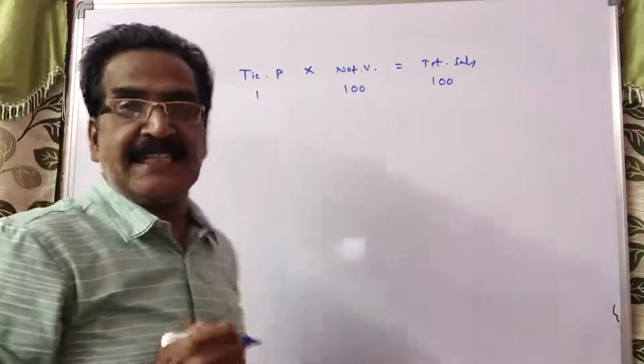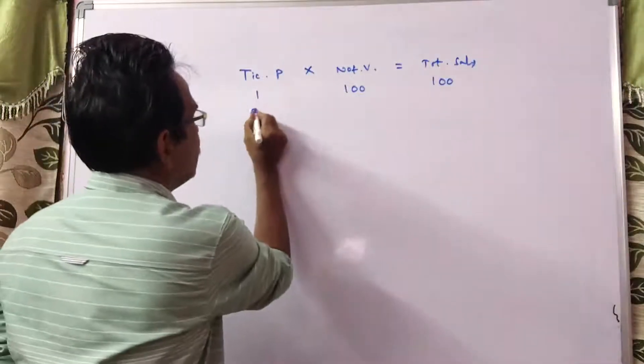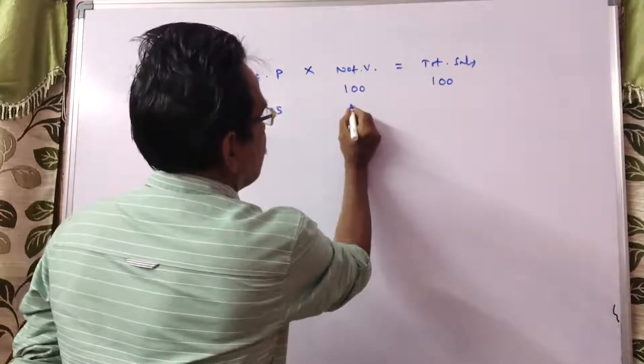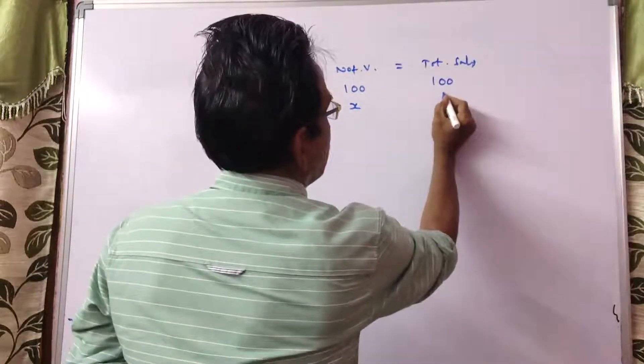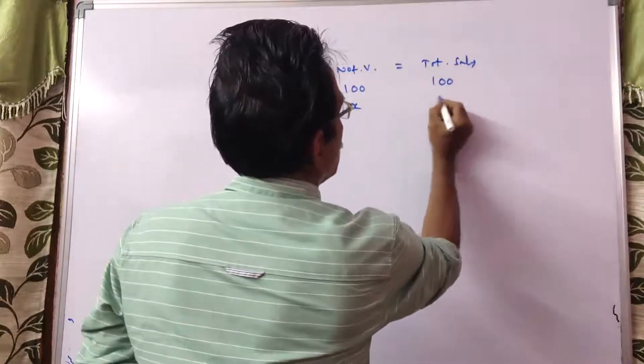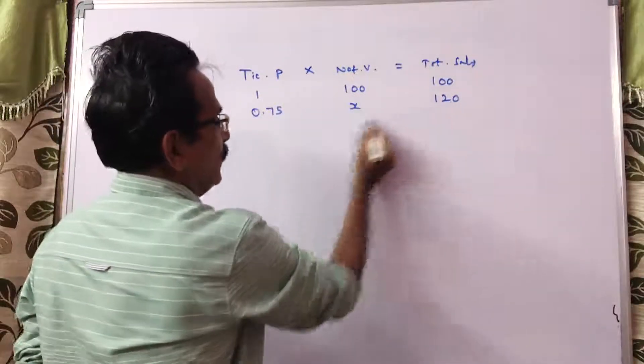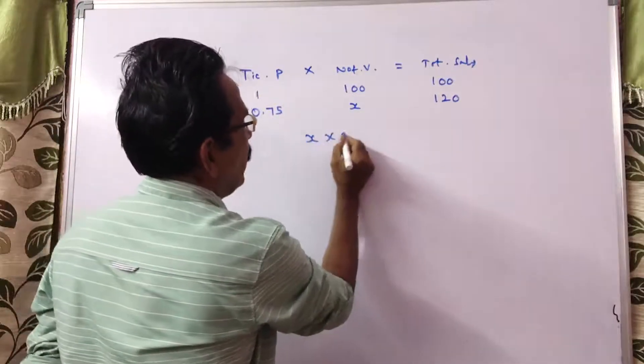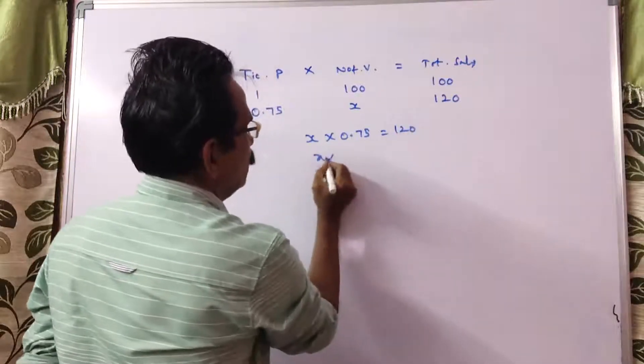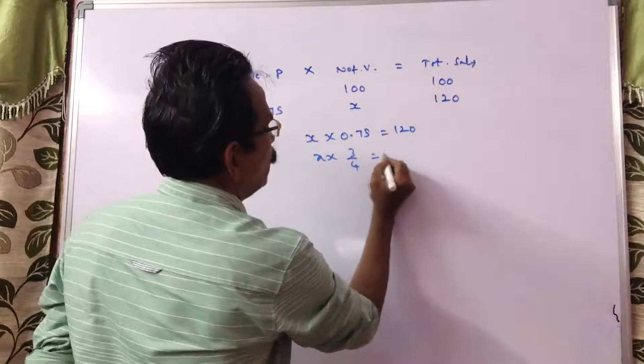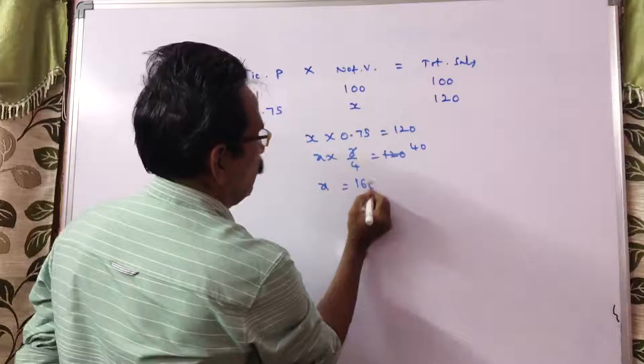Now, the ticket is reduced by 25 percent. Now, the price of the ticket is 75 paise. Let us say the visitors x. Now the business is increased by 20 percent, so that is equal to 120. Now, x into 0.75 is equal to 120. x into 3 by 4 is equal to 120. 3 40s, 4 4s, 160. x is equal to 160.